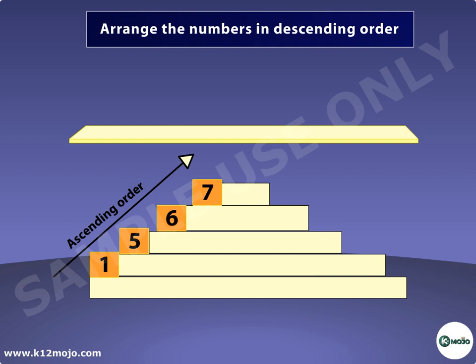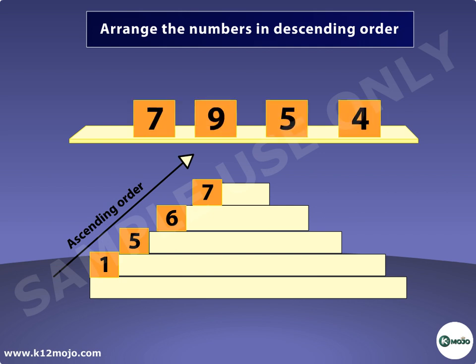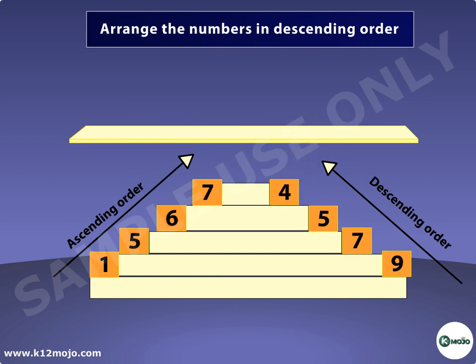Now arrange the numbers 7, 9, 5, and 4 in descending order. The biggest number here is 9 and the smallest number is 4. Between 7 and 5, seven is the bigger number. The numbers arranged in descending order are 9, 7, 5, 4.